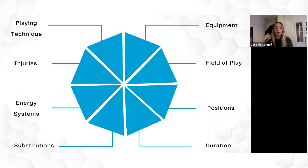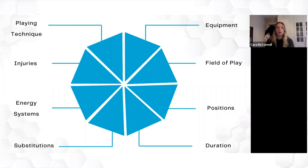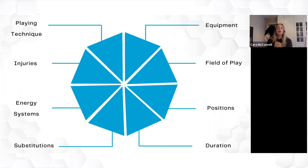I then look at common areas of injury and risk factors that come into play. That helps me program prehab work — whether in the warm-up or as extra home programs — to help make them more robust players. For example, if the knee is a common injury area in the sport, we need to work to protect that joint. We just need to make sure it's specific and in line with our needs analysis, rather than doing generic shoulder prehab when the sport doesn't really demand it.